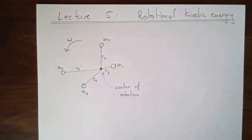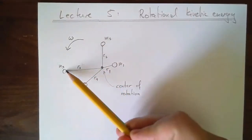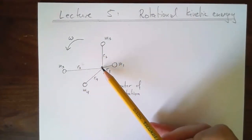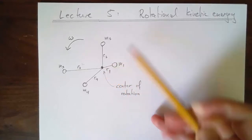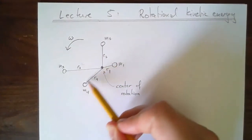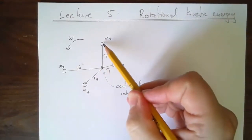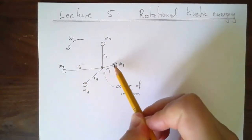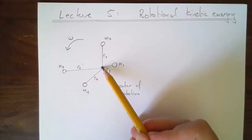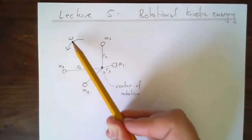The system I want us to imagine is something like this: there's some pivot point, and there are a bunch of point masses attached in some way to this point. I've drawn different radii — that doesn't mean the object has to look like there's a straight connection. The important part is that we imagine only those masses sitting in those spots are relevant.